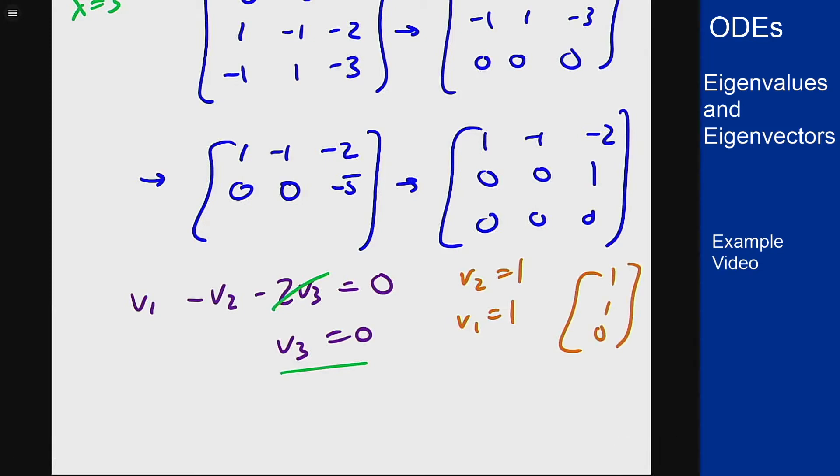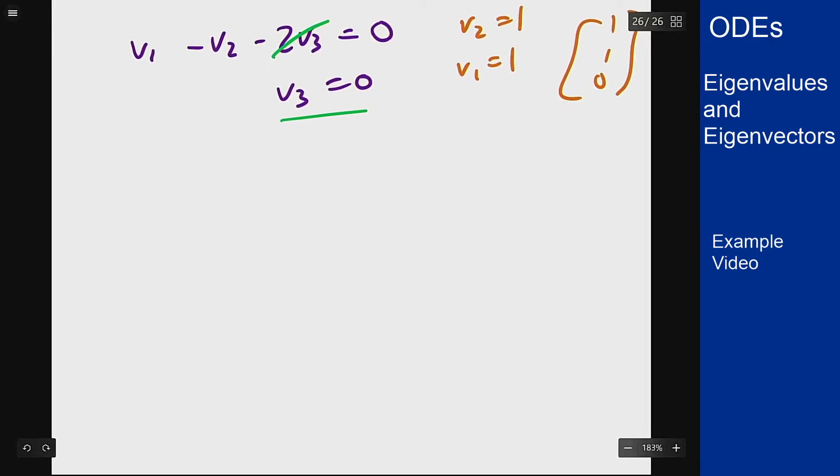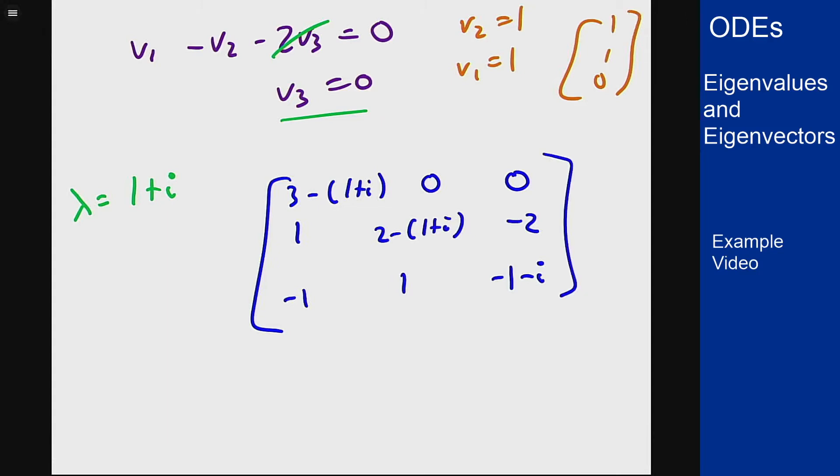Now for the complex eigenvalues we've got to be a little more careful with this. We're going to only pick one of the two complex eigenvalues because the other vector will be the conjugate of the one we get this way. So we'll just pick lambda to be 1 plus i and write our matrix again: 3 minus (1 plus i), 0, 0; 1, 2 minus (1 plus i), -2; -1, 1, negative (1 plus i). We'll write these out a little bit.